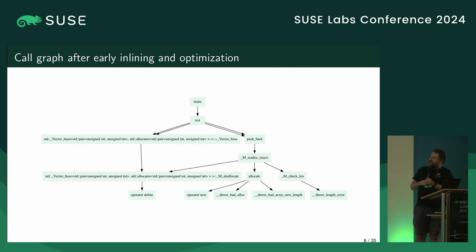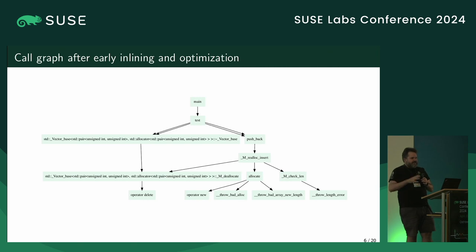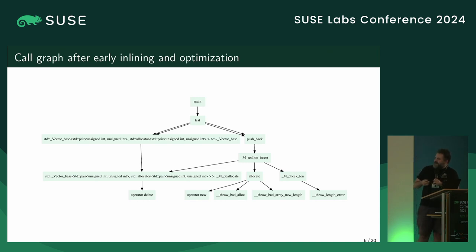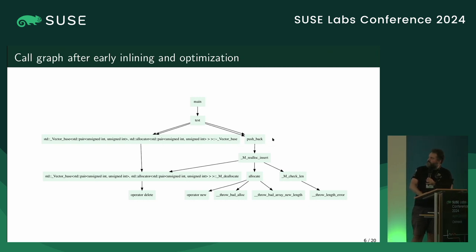GCC has something called early optimization and early inlining — a simplified compiler pass that makes very obvious decisions to eliminate the initial abstraction penalty. After early optimization, my test is actually calling only two functions: it allocates the vector and does the push_back. The push_back calls realloc_insert, which calculates the size, allocates the memory, and handles the three different exceptions.